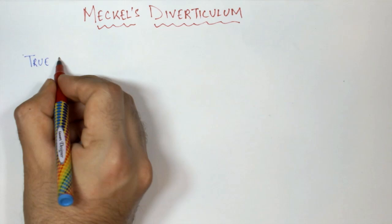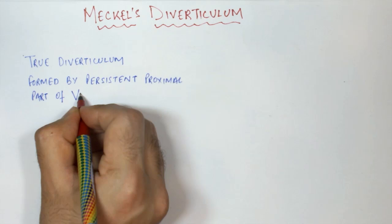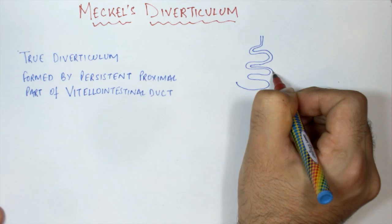A Meckel's Diverticulum is a true diverticulum as it contains all three layers of the intestine, and it is formed by a persistent proximal part of the vitellointestinal duct. Suppose this is a fetal foregut and this is the anterior abdominal wall and this is the yolk sac.